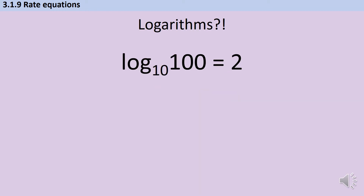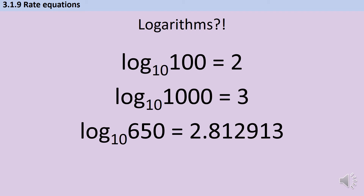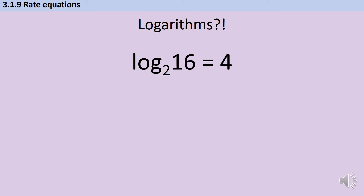On your calculator you have various logarithm buttons. The easiest to explain is log base 10: if I put in the number 100, I get the answer 2, which tells me that 10 to the power of 2 equals 100. Likewise, log base 10 of 1,000 gives me 3, because 10 to the power of 3 is 1,000. For a number that isn't a normal power of 10, like 650, I can put log base 10 of 650 into my calculator and it gives me 2.81, meaning 10 to the power of 2.81 equals 650. We don't just have logarithms with a base of 10 — we can have a logarithm with a base of any number.